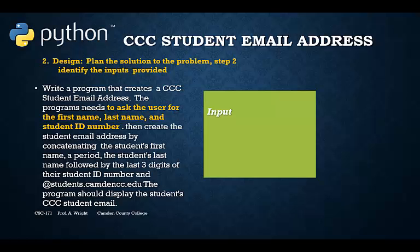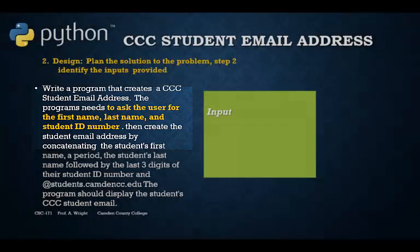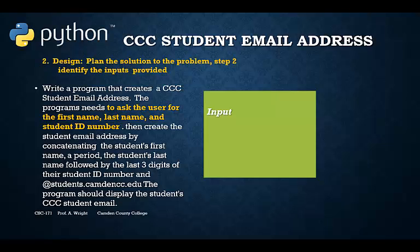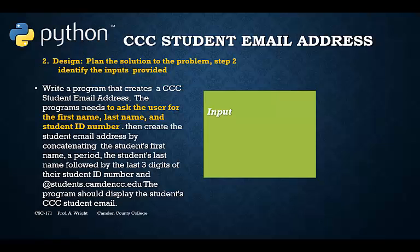Next, we consider the inputs provided. We need to ask the user to enter their first name, last name, and student ID. We will need all of these pieces of information in order to create the email account name. In the problem description, look for words such as input, request, retrieve, and ask — they will be clues for what needs to be input to the program. Now is a good time to decide on the names of the variables you will use inside the program, which will help us stay consistent once we start coding a solution.